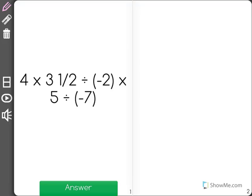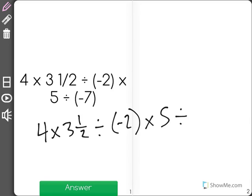4 times 3 and a half divided by negative 2 times 5 divided by negative 7. Now that looks like a lot, and it doesn't help that it's on two lines, so I'm going to write it all across on one line here at the bottom, and then we're going to work through the order of operations to solve it.